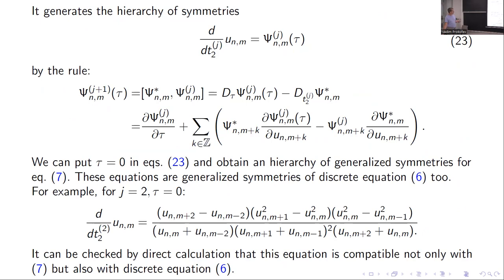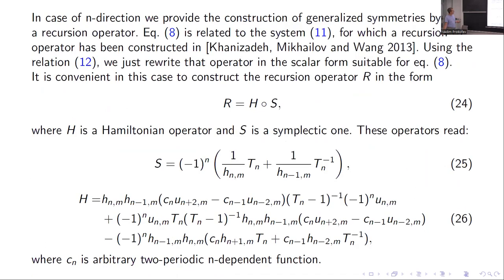For example, the next order symmetry is equal to this equation, and this is a symmetry for this equation. The recursion operator in the n-direction, constructed by the standard program, is a combination of a Hamiltonian operator and a symplectic operator. We found these operators using the work of Iyudu and others.